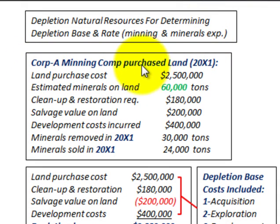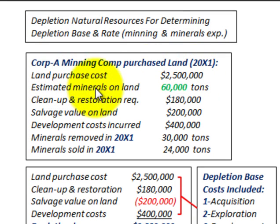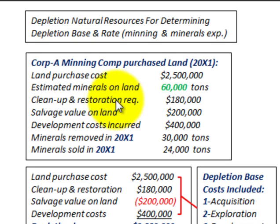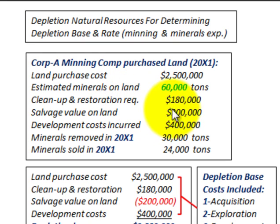Corporation A, a mining company, purchased land in 20X1 at the beginning of the year. The land purchase cost was $2.5 million, and they estimated that 60,000 tons of minerals would be mined off the land. It was a requirement that the land be cleaned up and restored to its natural condition, estimated at $180,000, and the estimated salvage value of the land after restoration was $200,000.